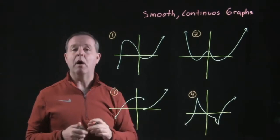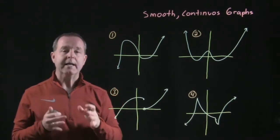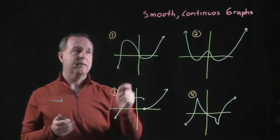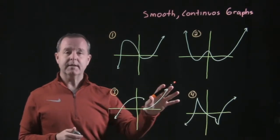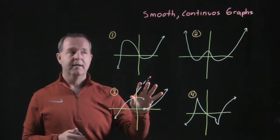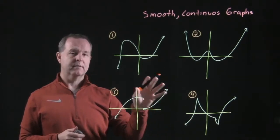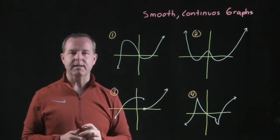Another characteristic of polynomial functions is the idea of the graphs being smooth and continuous. I have four examples here of graphs that are functions but may not be all smooth and continuous.